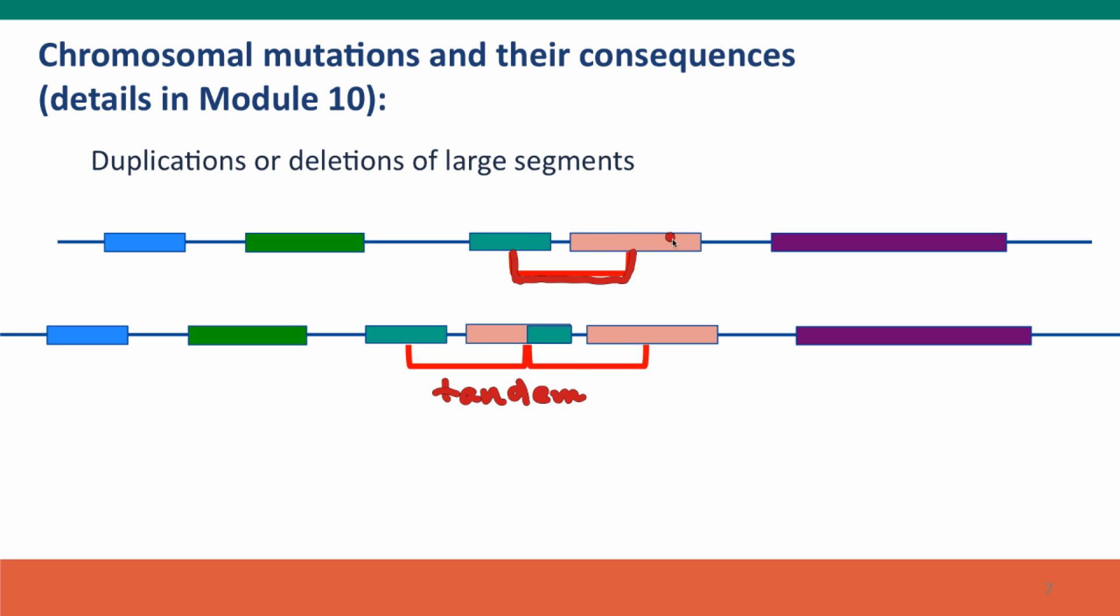So we've still got a copy of the green gene and the pink gene. And we've got a new gene, a hybrid gene, whose first half is the pink protein and the second half is the green protein. If the reading frames are compatible, this may produce a completely new protein.